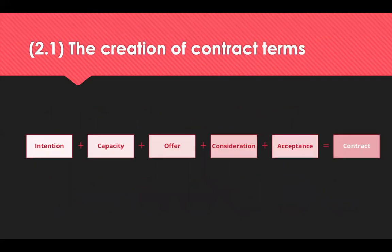Intention is that the contracting parties must intend to enter into a legal contract and they should be of sound mind and fully aware of their contractual obligations. That's what capacity relates to — parties have sound mind and are fully aware of their obligations. They can't be underage or suffering from any sort of mental health issues.